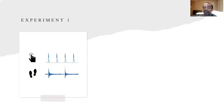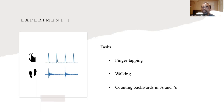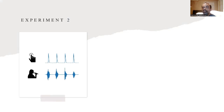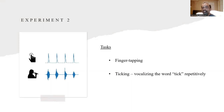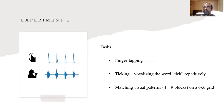We had two experiments. Experiment one had finger tapping and walking as periodic tasks and counting backwards as the cognitive task to induce additional cognitive load. There were two levels of difficulty: counting backwards in threes or in sevens. For experiment two, we still had finger tapping as task one, and for task two we used ticking, which is just vocalizing the word 'tick' repetitively. For the cognitive task in experiment two, we had visual pattern matching that had six levels of difficulty from four block patterns to nine block patterns.